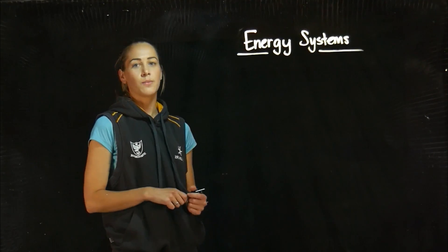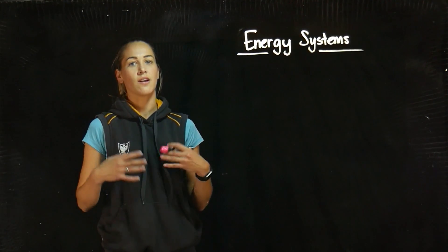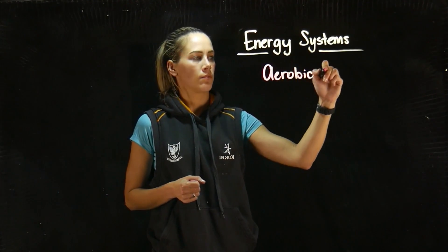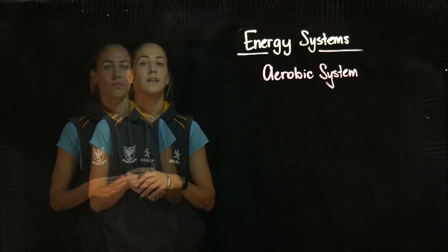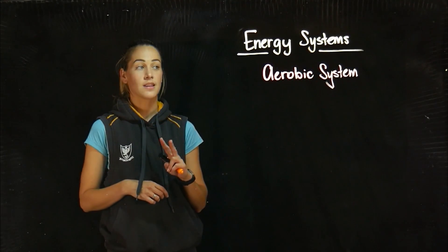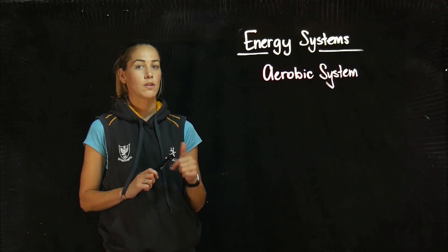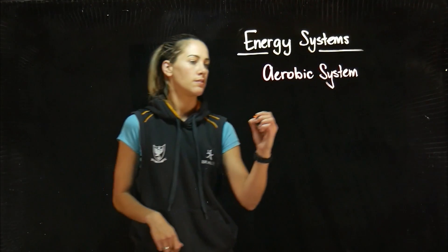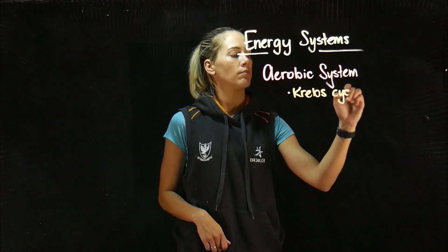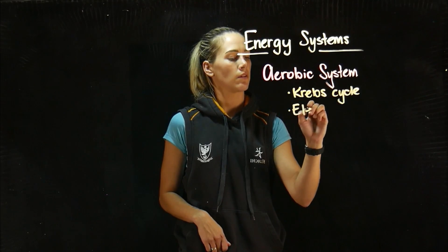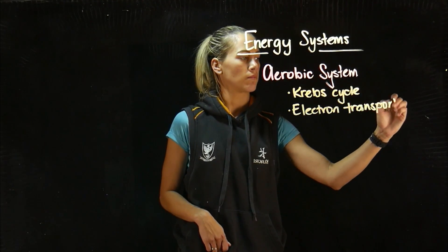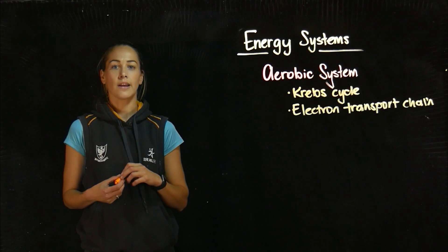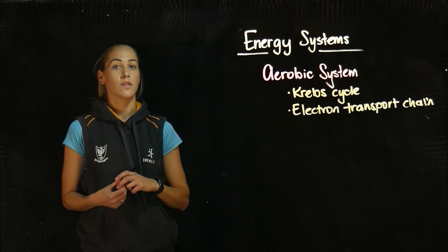The third and final energy system we're looking at is the aerobic system. There are two parts of the aerobic system: the Krebs cycle and the electron transport chain. Aerobic means with oxygen.